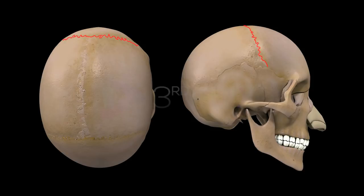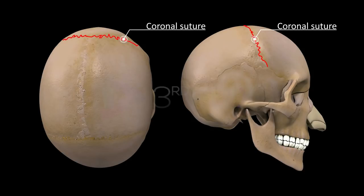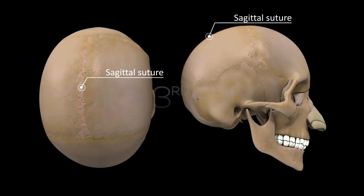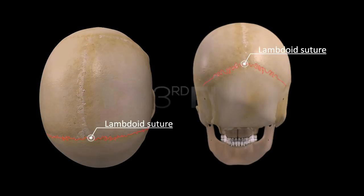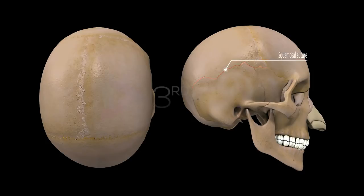The frontal bone is articulated with the two parietal bones by the coronal suture. The sagittal suture is present between the two parietal bones. The two parietals are joined with the occipital bone by the lambdoid suture. The temporal bones are joined with the parietal bones by the squamosal sutures.